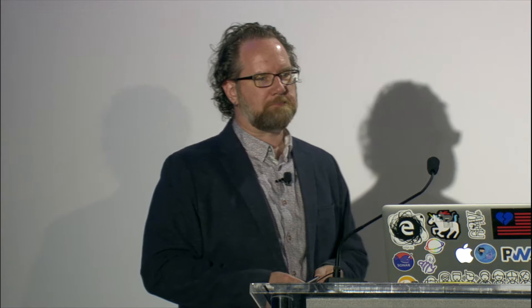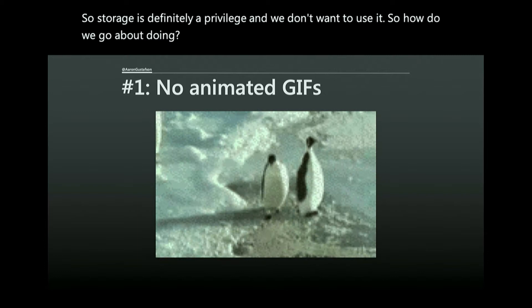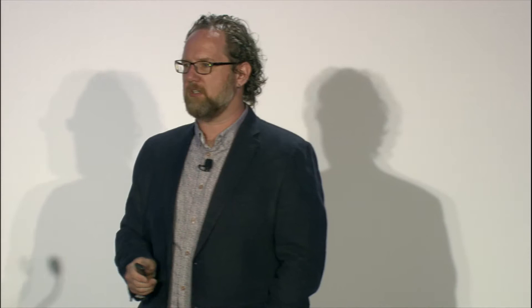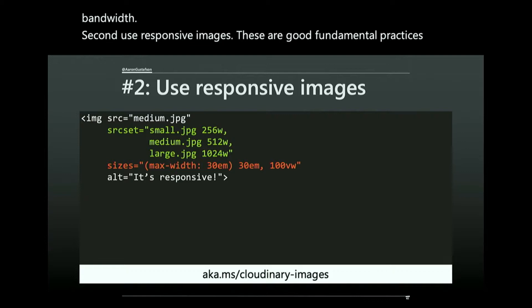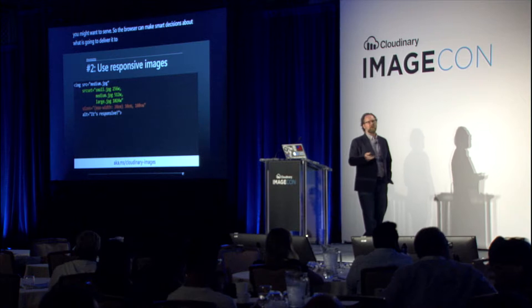Storage is a privilege and we shouldn't abuse it. First, no animated GIFs — they're too big. If you absolutely need animation, use silent MP4s, which are much smaller. Don't do giant background animations. Second, use responsive images — use srcset and sizes to define different image sizes so the browser can make smart decisions about what to deliver to the client.